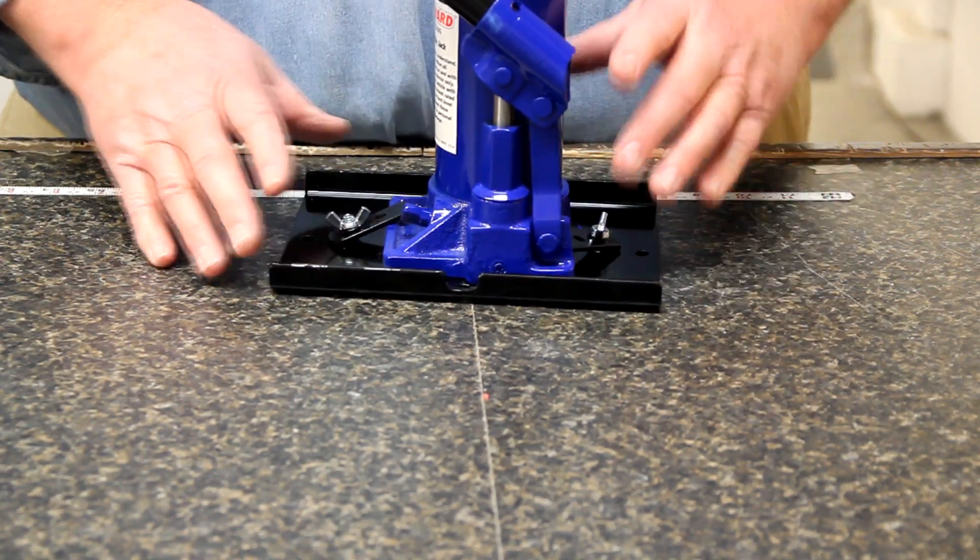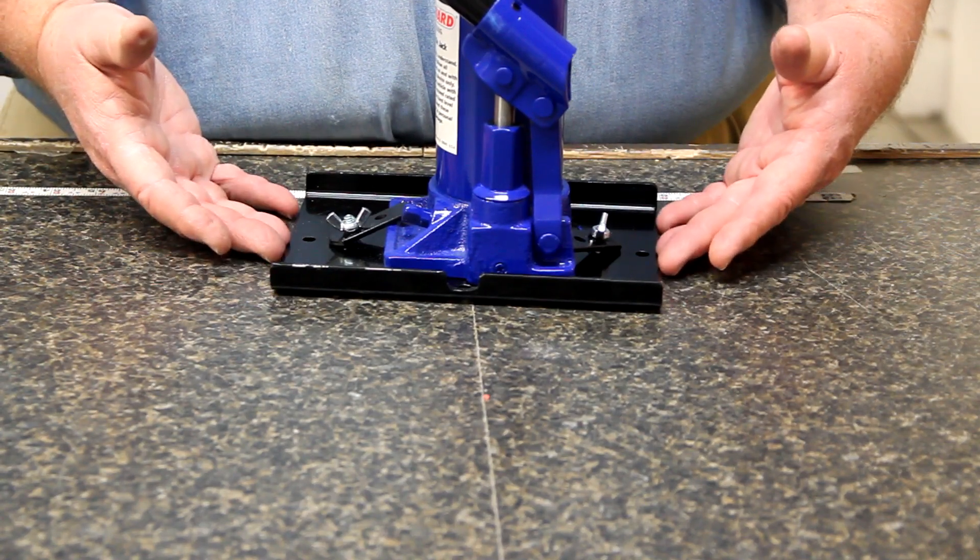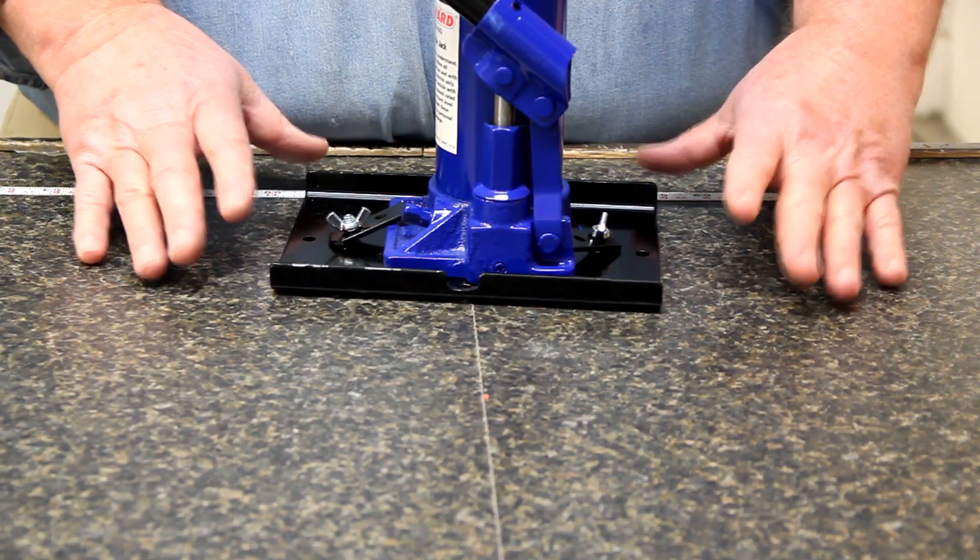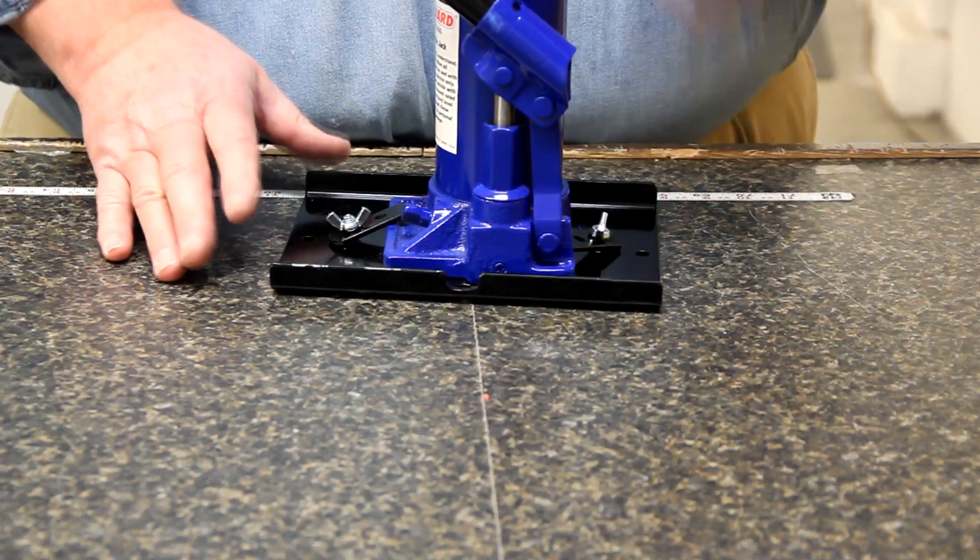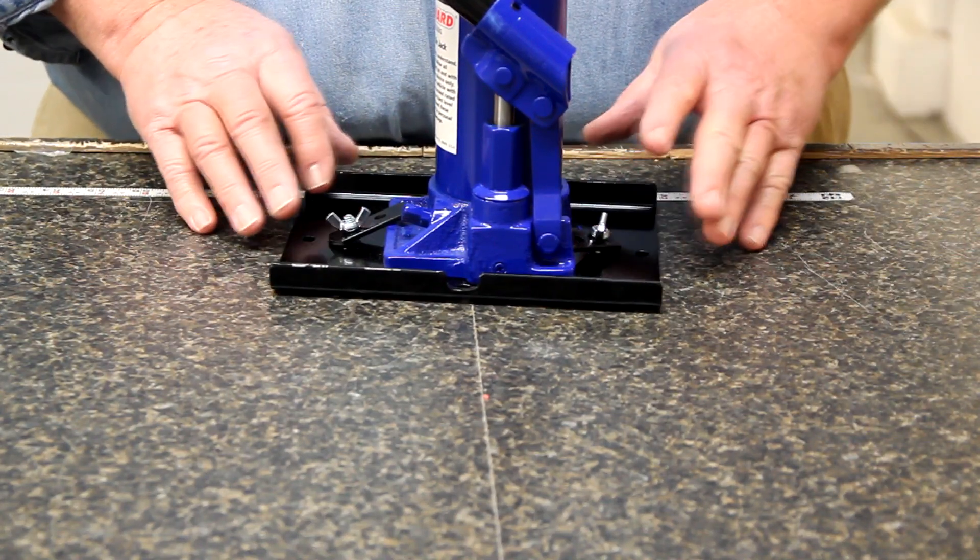And this by itself increases the base plate area of the bottle jack up to 4 times. So, your flotation area in soft soil or stability on even a hard surface is much greater with base plate installed.